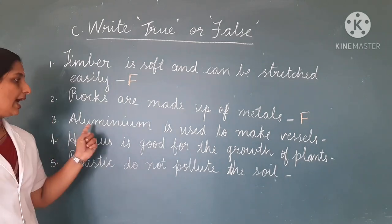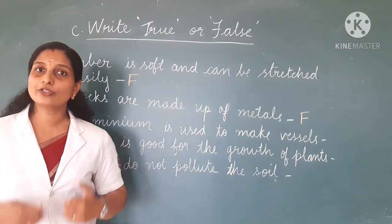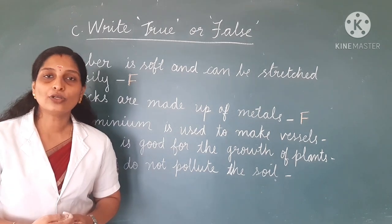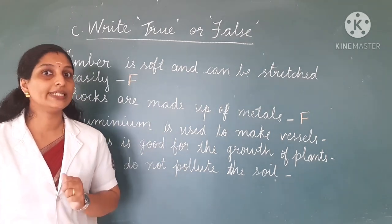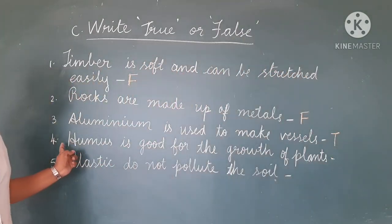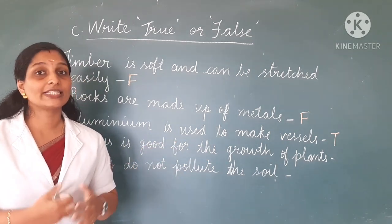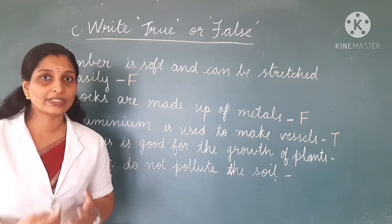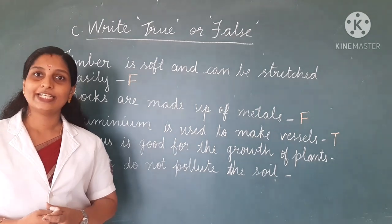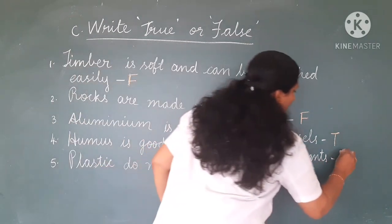Third sentence: aluminum is used to make vessels. Yes — we use aluminum for vessels. Aluminum vessels are very common. So this is a correct sentence; you have to put T for true. Fourth sentence: humus is good for the growth of plants. Humus is decayed plant matter and it is very good for the growth of plants. So this sentence is also correct; you have to put T for true.